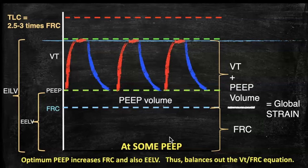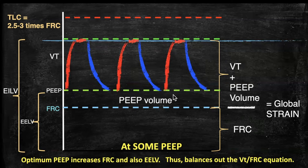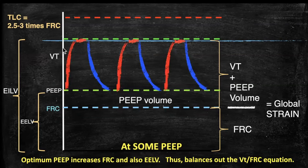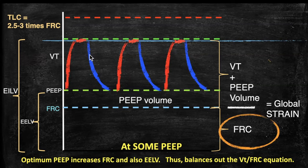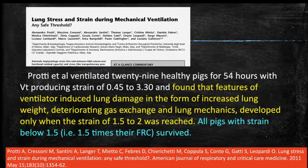A good healthy PEEP introduces some PEEP volume for alveolar recruitment, improving oxygenation, carbon dioxide elimination, and lung compliance. Although it may increase global strain somewhat, the benefits outweigh the harms. With healthy PEEP, end-inspiratory lung volume remains significantly below total lung capacity — a win-win situation.